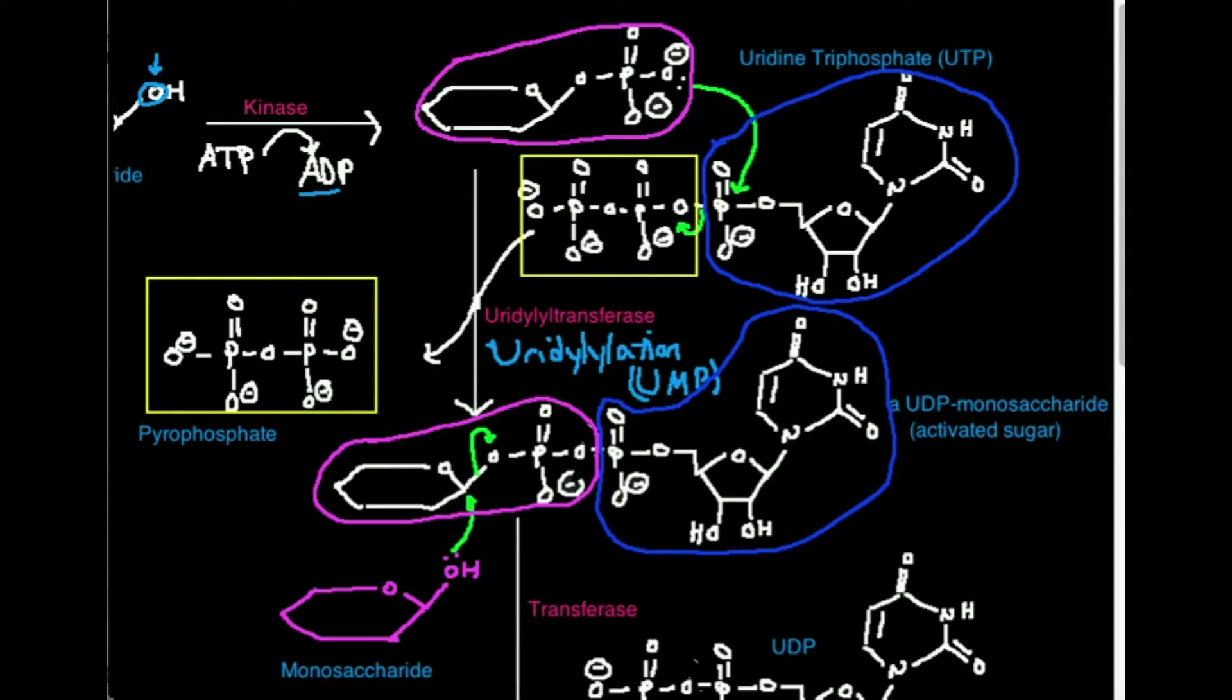Why is it a UDP monosaccharide? Because we have a carbohydrate right here that's a monosaccharide. And effectively, all this over here is UDP. So a UDP monosaccharide.